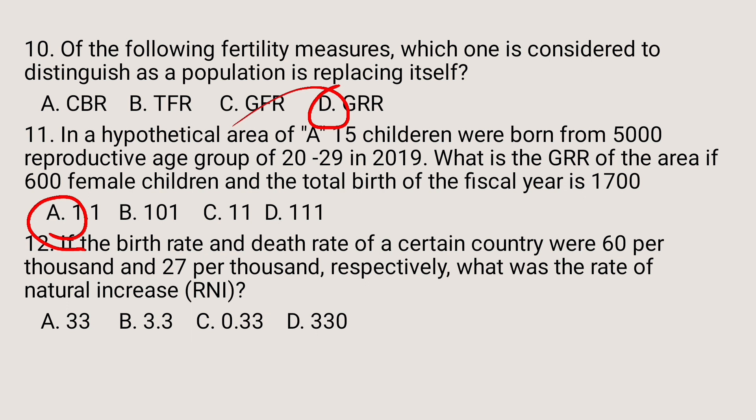Question number 12. If the birth rate and death rate of a certain country were 60 per thousand and 27 per thousand respectively, what was the rate of natural increase?